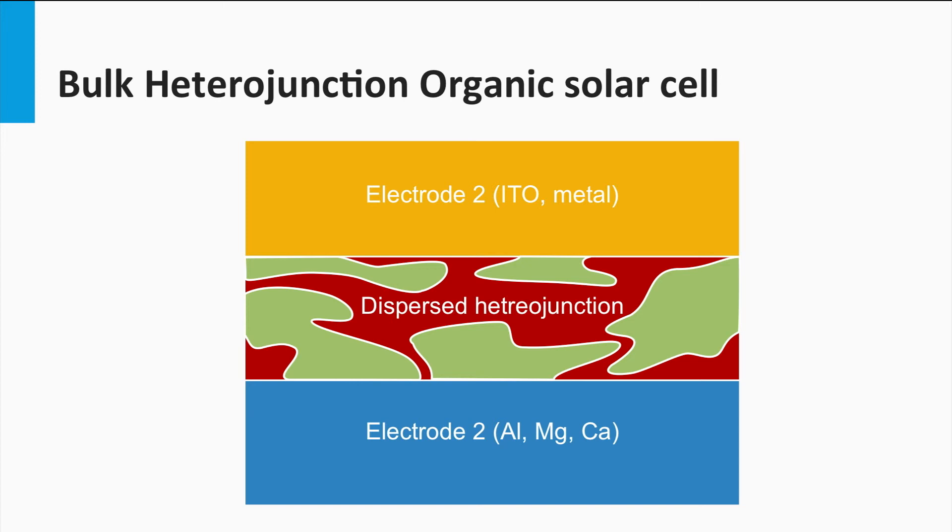The electrons move through the acceptor material to the electrode. The holes move through the donor material to be collected at the other electrode. The holes are usually collected at a TCO electrode like ITO. The electrons are collected at a metal back electrode.